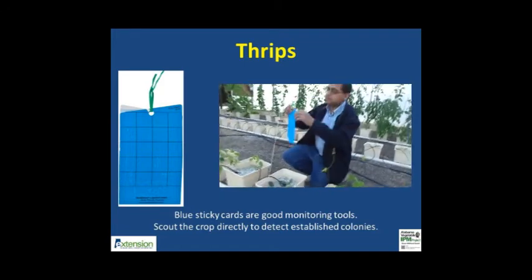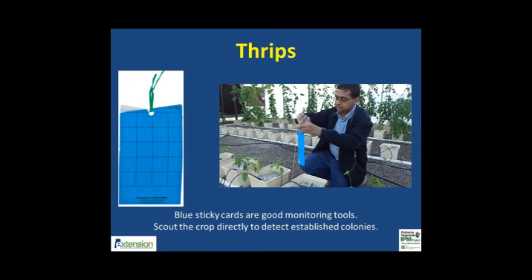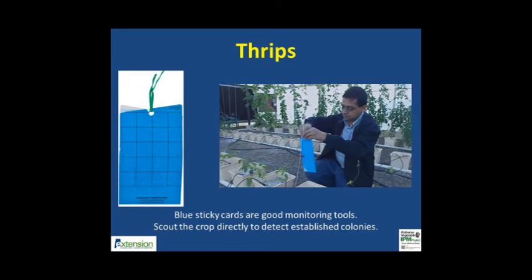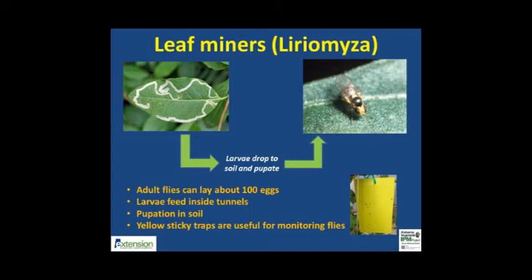Some sticky blue cards have a grid printed on them to make it easy to count a large number of insects. Leaf miners belonging to the genus Liriomyza can be a major pest in greenhouses. Flies are one to three millimeters long with a yellow and black body and one pair of wings. Eggs are laid in small punctures on leaves and larvae feed inside tunnels that grow with their size. Larvae drop to the ground to pupate and then emerge as adult flies. Infested plants may shed leaves and become very weak. Liriomyza is known to feed on many commercial vegetables, ornamentals, and weedy host plants.